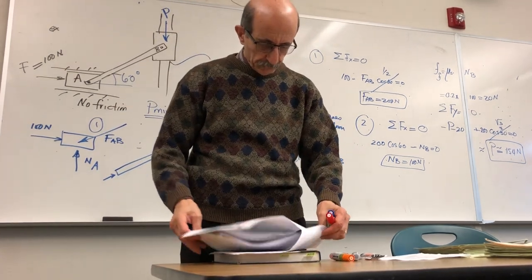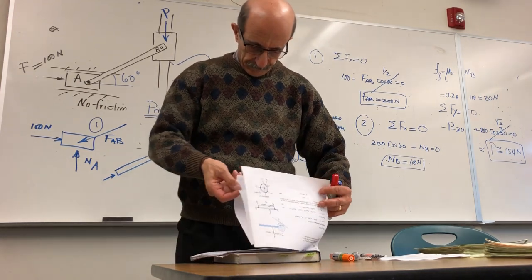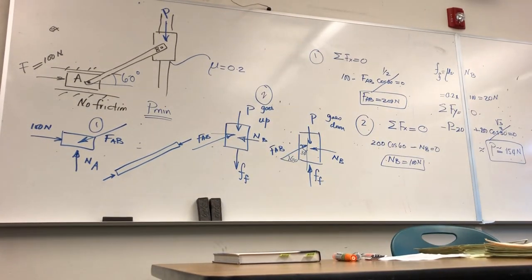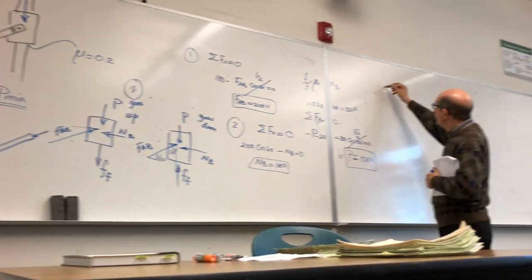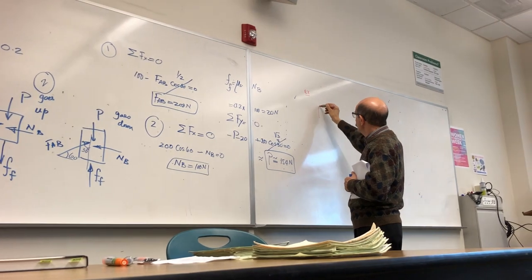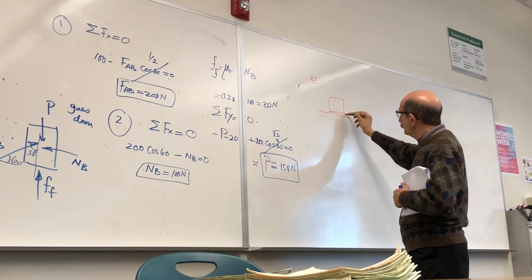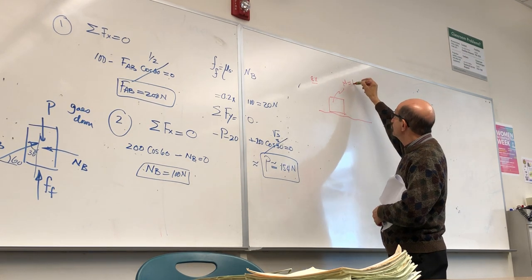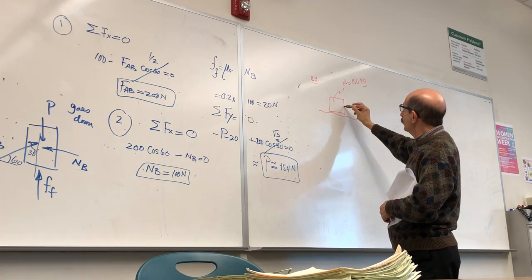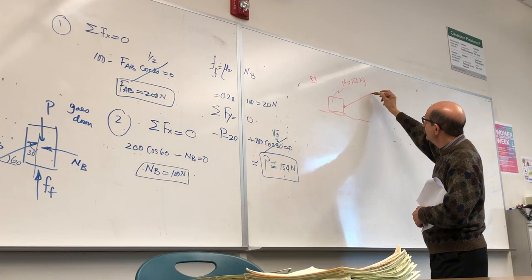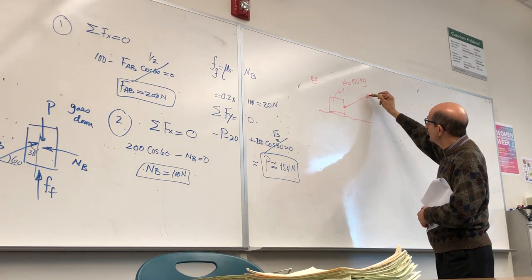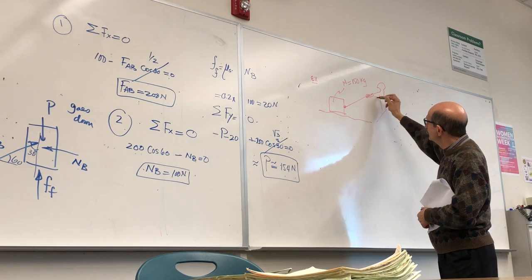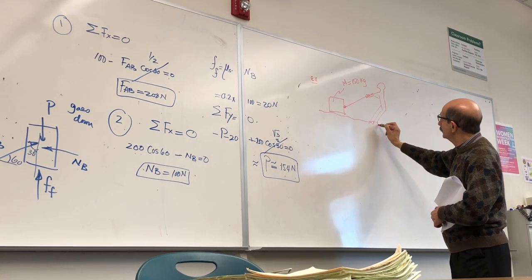Let's do another problem — a Case 2 problem. A crate sits on a rough surface with mass 150 kilograms. A cable is attached to it, and a man wants to pull it.